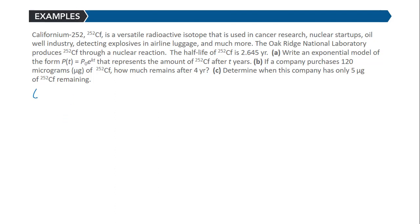In Part A, we're looking for the model P(t) = P₀e^(kt). I may have misled you in the previous slide because we don't always know what the starting amount is. Right now all we know is that the half-life is 2.645 years. We don't even really know what P₀ is. But what we do know is that the half-life is the time that it takes for half of the original amount to decay. So if our original amount is P₀, half of that is going to be 1/2 P₀ or 0.5 P₀.